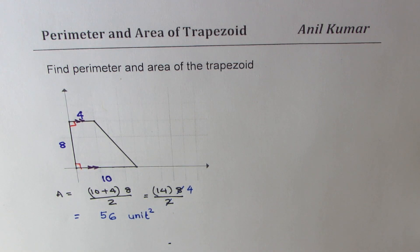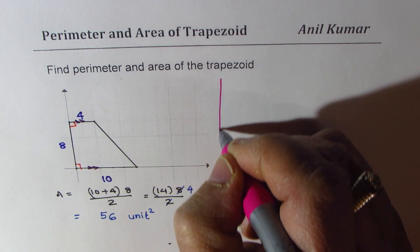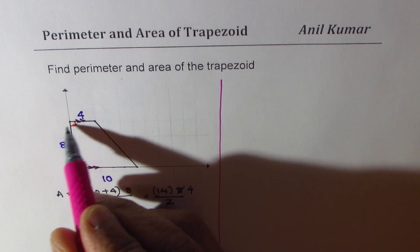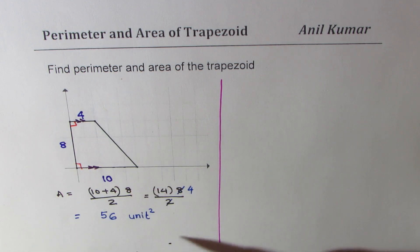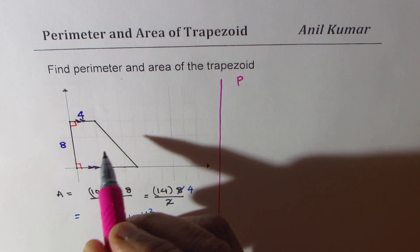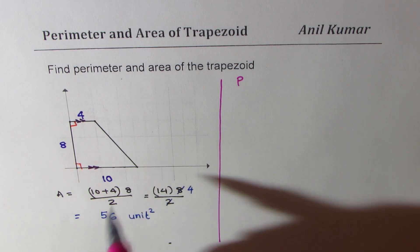Area was simpler in this particular case. How are you going to find the perimeter? That is slightly tricky. Perimeter is the sum of all the sides, but we don't know the length of that slanted side.